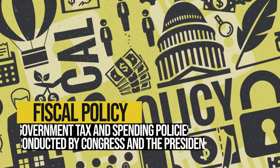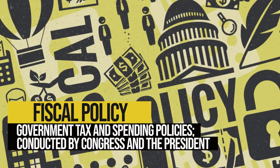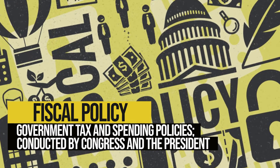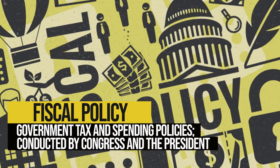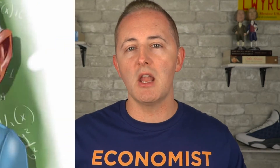Now let's get even more specific. Back in Unit 2, we defined fiscal policy as tax and spending policies. Congress and the President are in charge of fiscal policy. One of the many fiscal policy debates is over what, if anything, governments should do when the economy is in a recession. Two of the prominent economic schools of thought in this area are Keynesian and supply-side economics.